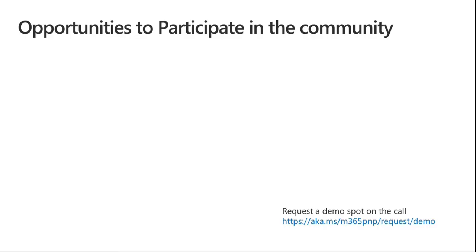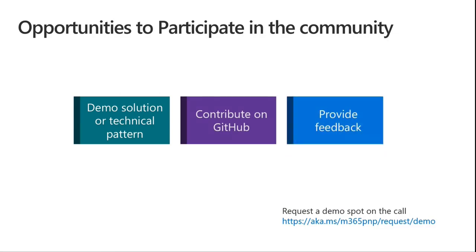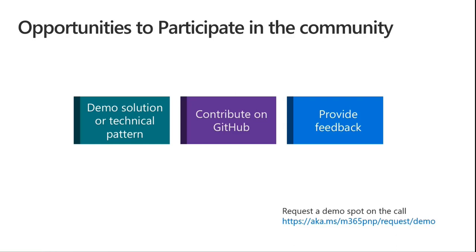Let's talk about how you can get involved in this community — we absolutely welcome you. There are a number of opportunities. You could demo a solution, a technical pattern, a project, or something cool you've created or found in the community. We've made it super easy to apply and request a demo spot at aka.ms/m365pnp/request/demo. We'd love to see you contribute on GitHub. Of course, we'd love to hear feedback — what you'd like to see more of, or what's not working for you. We ask that you keep it positive and constructive; we're here to support you.